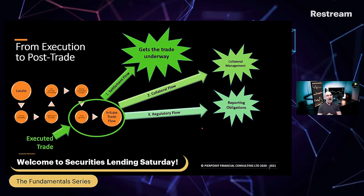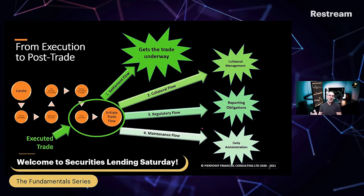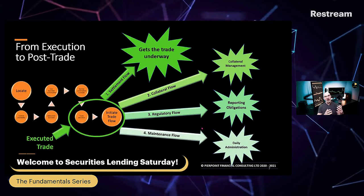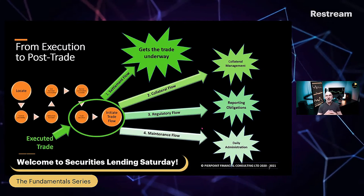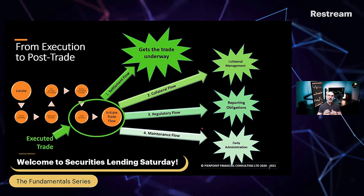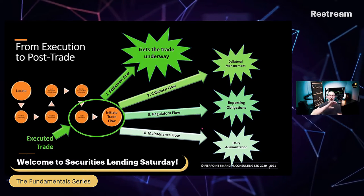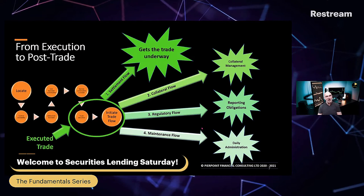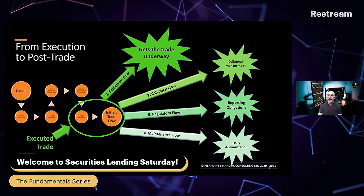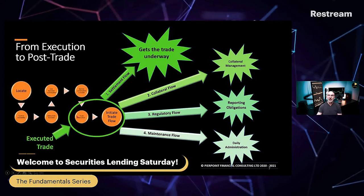The fourth of the post-trade elements is the actual maintenance, the daily flow, the daily administration of the mark-to-market movements, the entitlements for the beneficial owners, and all of the flows that go around that. That in itself is a separate mainstream flow that needs to be looked at separately. So while you could say that there is one post-trade, there really are four different post-trades that combine into the overall obligations. Today we're going to be talking about the settlement flow after trade execution.